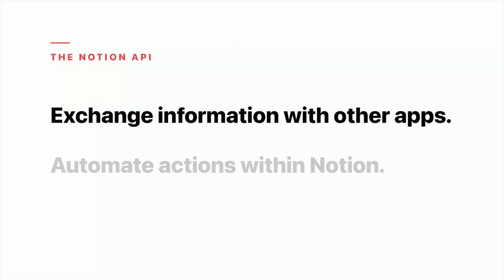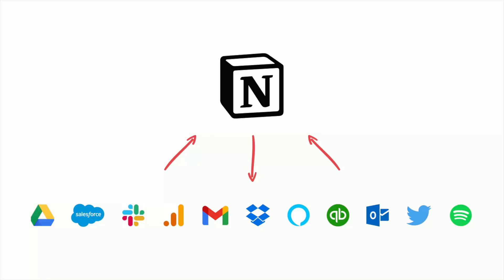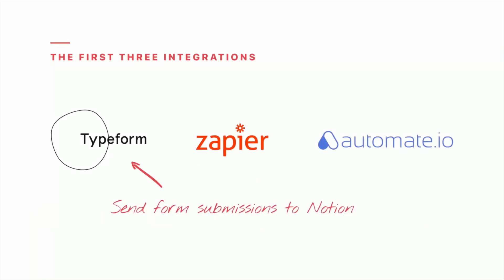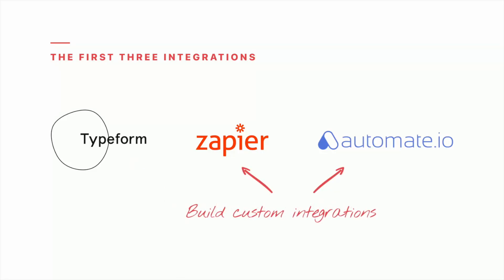The first capability is that you can connect Notion with other apps to exchange information and make updates — if you make an update in one app, the change is reflected in the other. That means you can sync your contacts, your calendar events, your expenses, and other information from a variety of sources.